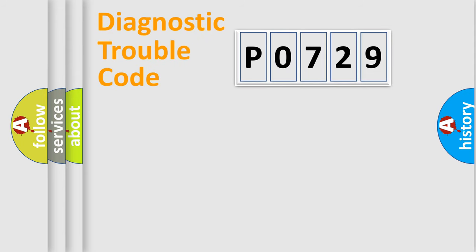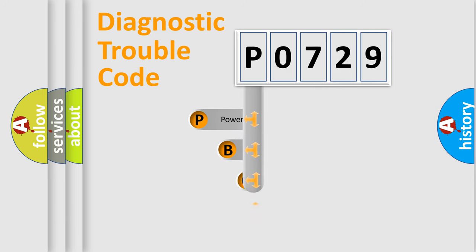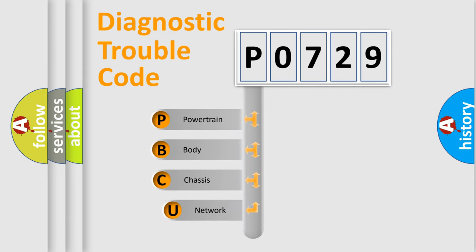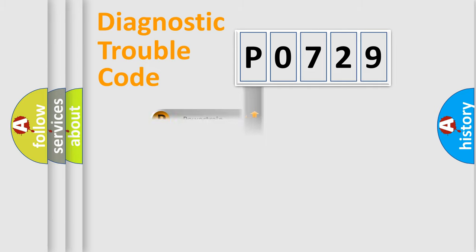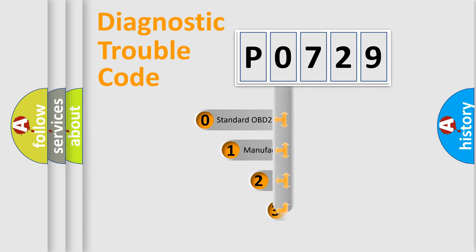Let's do this. First, let's look at the history of diagnostic fault code composition according to the OBD-II protocol, which is unified for all automakers since 2000. We divide the electric system of automobile into the four basic units: Powertrain, Body, Chassis, and Network. This distribution is defined in the first character of the code.